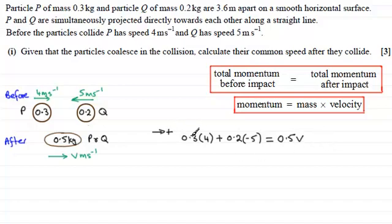So what do we get? We get 1.2 minus 1, which is going to be 0.2. So therefore 0.2 equals 0.5 V. And if we divide both sides by 0.5, you end up with V equaling 0.2 divided by 0.5, which is 0.4. 0.4 meters per second.